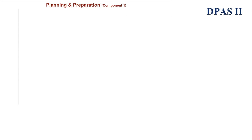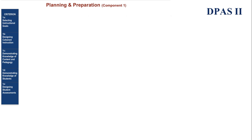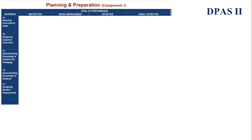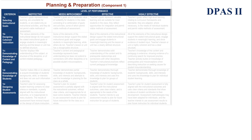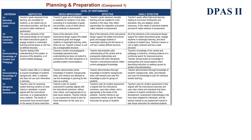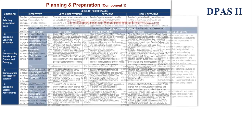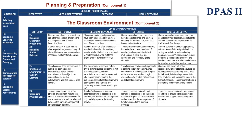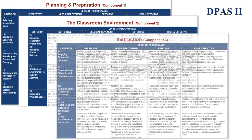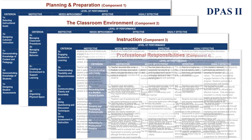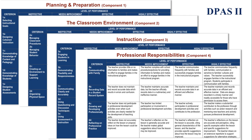Each of the four initial components of the D-PASS II rubrics has criterion and levels of performance. The four components include planning and preparation, the classroom environment, instruction, and professional responsibilities.